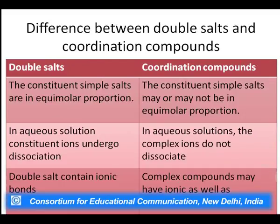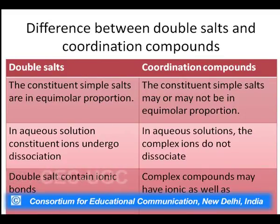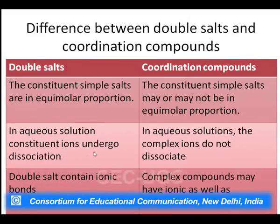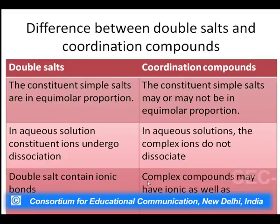The difference between double salts and coordination compounds is that double salts result when constituent simple salts are mixed in equimolar proportions, whereas for coordination compounds the constituent salts may or may not be in equimolar proportions. Double salts undergo dissociation into their constituent ions on dissolution in water, whereas coordination compounds dissociate into complex ions and counter ions, but the complex ion does not dissociate. Double salts contain ionic bonds, whereas complex compounds may have ionic or coordinate bonds.